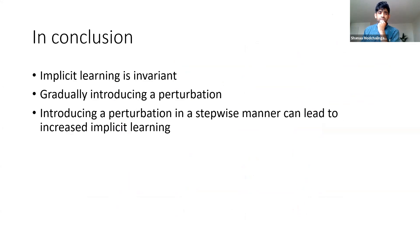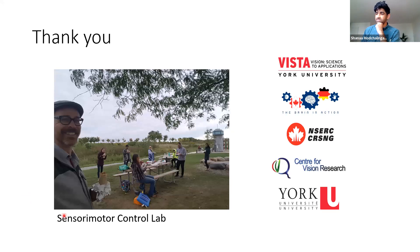In conclusion, implicit learning is invariant within the gradual and abrupt groups. Gradually introducing a perturbation actually leads to a lowering in strategy use, or it takes longer for people to come up with a cognitive strategy. However, introducing a perturbation in a stepwise manner like we predicted can lead to actual increases in implicit learning. We do think this is important because when it comes to like a rehabilitation sense, it's important that people are able to adapt to things while not having to cognitively think about the things that they're adapting to. With that said I'd just like to thank our lab. Here's Marius and Raphael who'll be giving a talk very shortly. From there I'll take any questions.